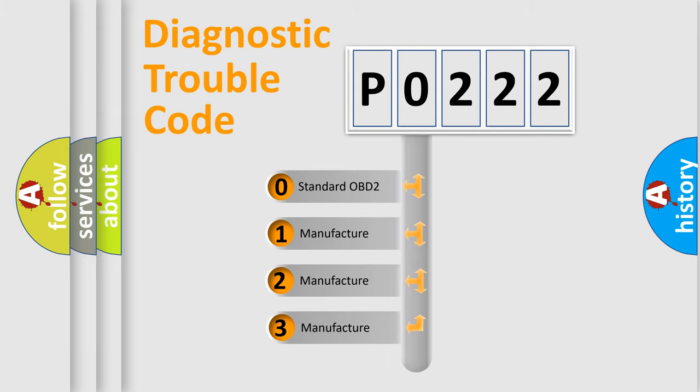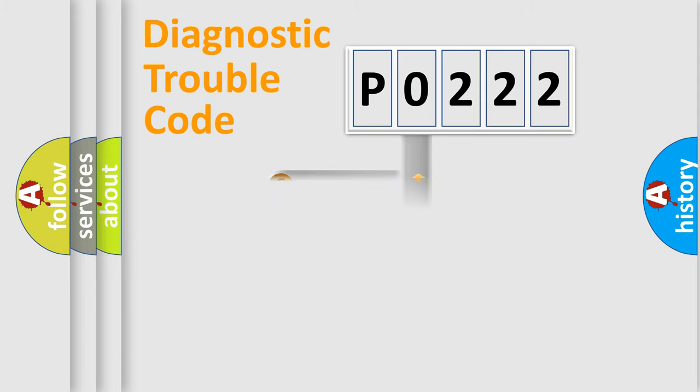If the second character is expressed as zero, it is a standardized error. In the case of numbers 1, 2, 3, it is a more precise expression of the car-specific error.